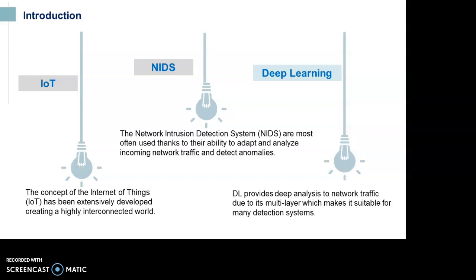Traditional classification algorithms are not very competent at solving network traffic detection problems due to massive data. Deep Learning Techniques have demonstrated their efficiency in this aspect by performing accurate detection, due to their capability of extracting and learning salient features from the data and classifying any attacks.